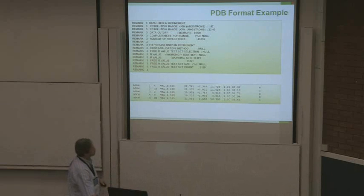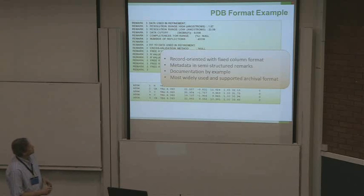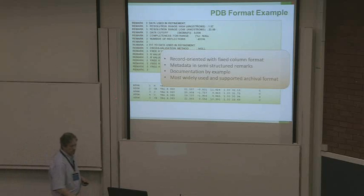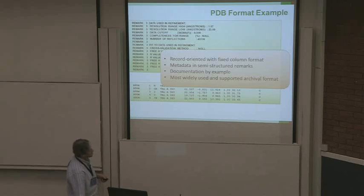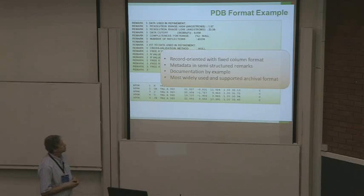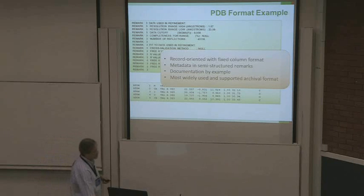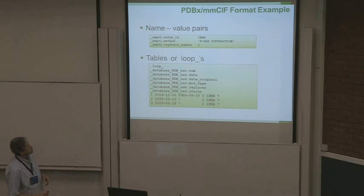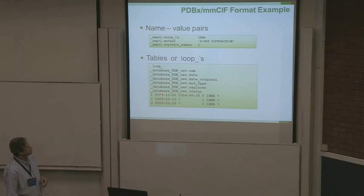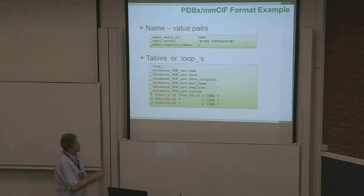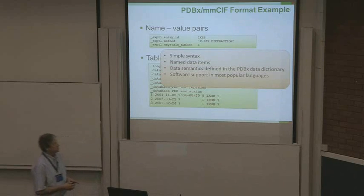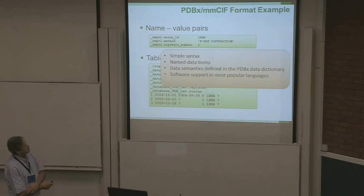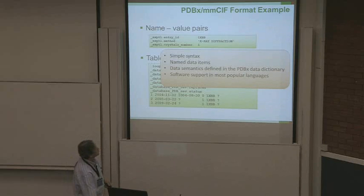The PDB format, which is by far the most popular format, is a record-oriented format which includes textual remarks marked up in a specific way. The documentation for this format is basically by example in a textual format description document. It's very widely used and widely supported in software. CIF format can either be key-value with well-defined names tied to the dictionary, or tabular, where the column names precede a regular layout of rows and columns. We believe it's a simple syntax, and most people familiar with it agree. All of the semantics are defined in a data dictionary, and currently there's pretty good support for this in almost all popular programming languages.